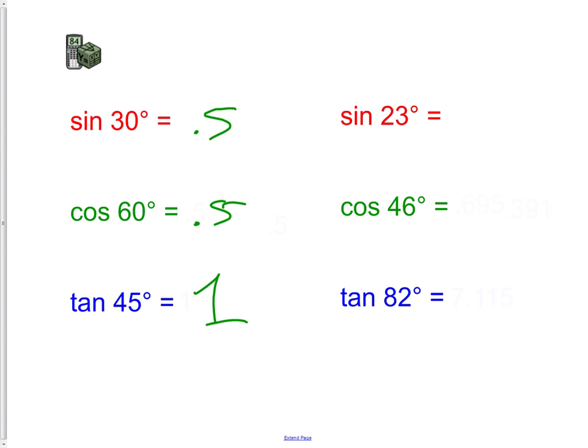Those are all nice numbers. They all round off pretty easily, or actually don't even round at all. Now let's see some of them that will. We have sine of 23. What we suggest and require you to do is round to three decimal places. If we do sine of 23, you are going to get 0.391. It was really 0.3907, but that rounds up to 0.391.